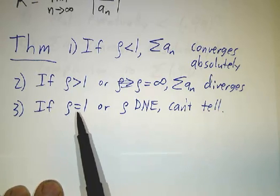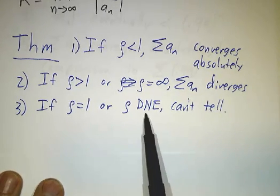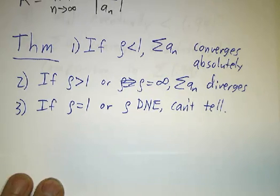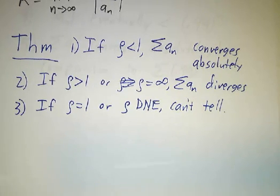And if the limit is one, or the limit doesn't exist if things oscillate, then the test fails. We just can't tell what happens.